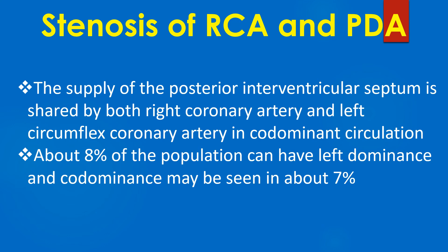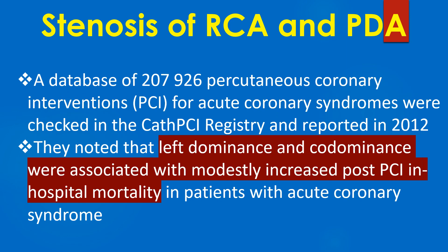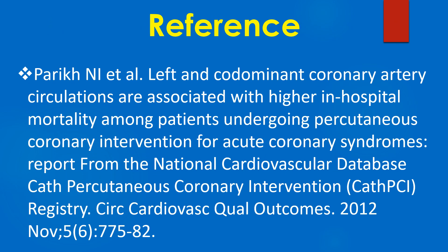About 8% of the population can have left dominance, and co-dominance may be seen in about 7%. A database of 207,926 percutaneous coronary interventions for acute coronary syndromes was reviewed in the cath-PCI registry and reported in 2012. They noted that left dominance and co-dominance were associated with modestly increased post-PCI in-hospital mortality in patients with acute coronary syndrome. The journal reference for this finding is also provided.